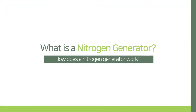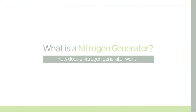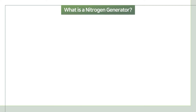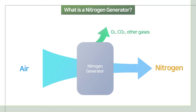Let's learn about what a nitrogen generator is and how it works. A nitrogen generator requires a compressed air supply to produce nitrogen gas. The compressed air is passed through the nitrogen generator to separate nitrogen out from the other elements like oxygen and carbon dioxide in the air.